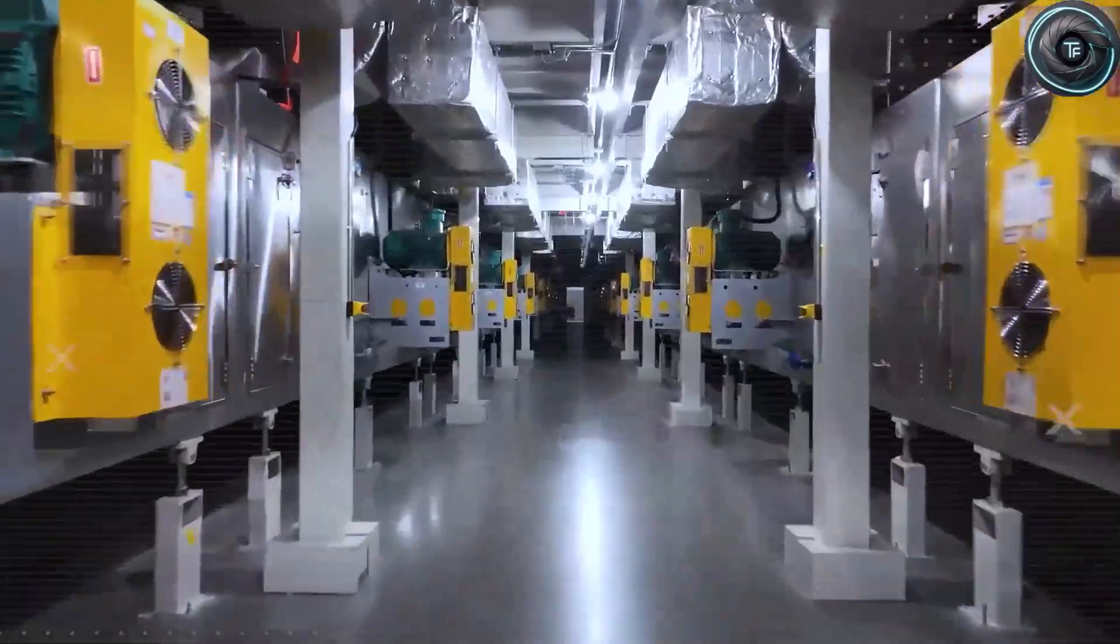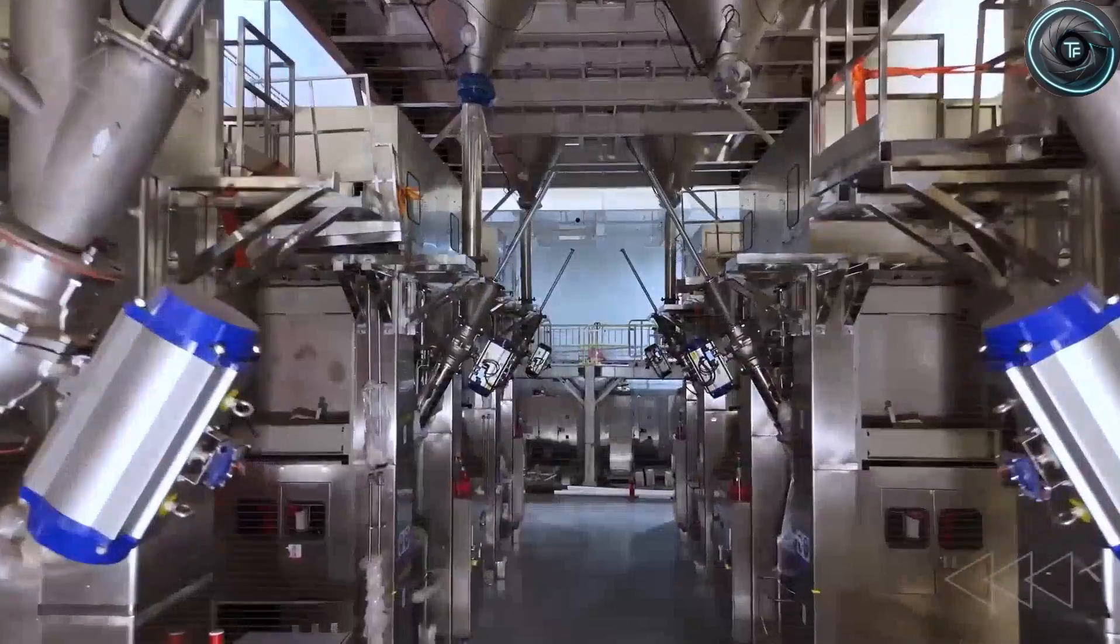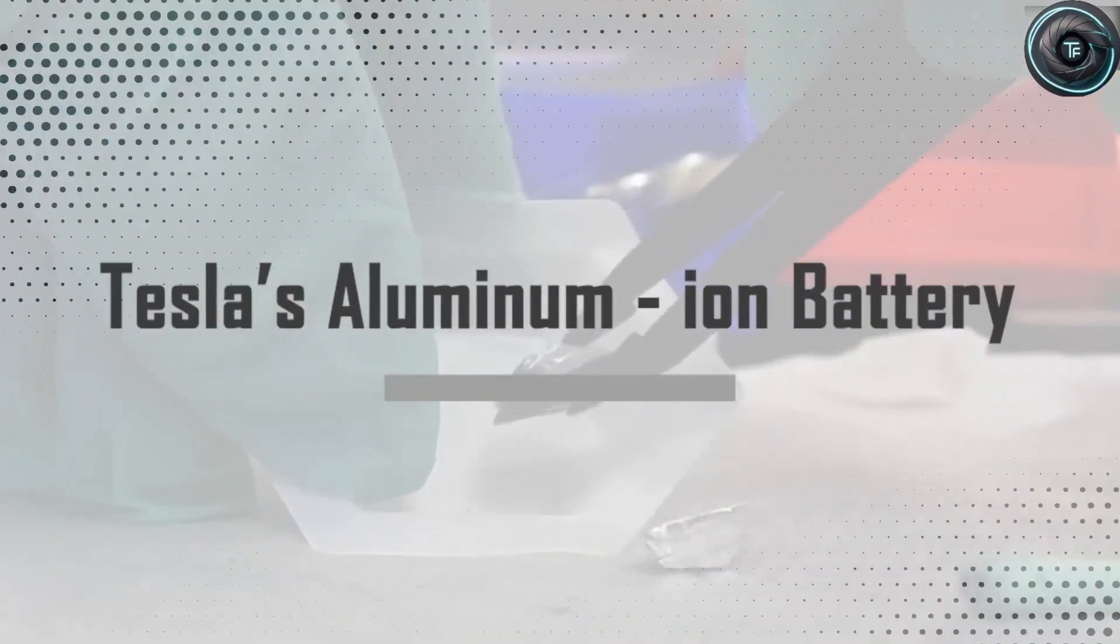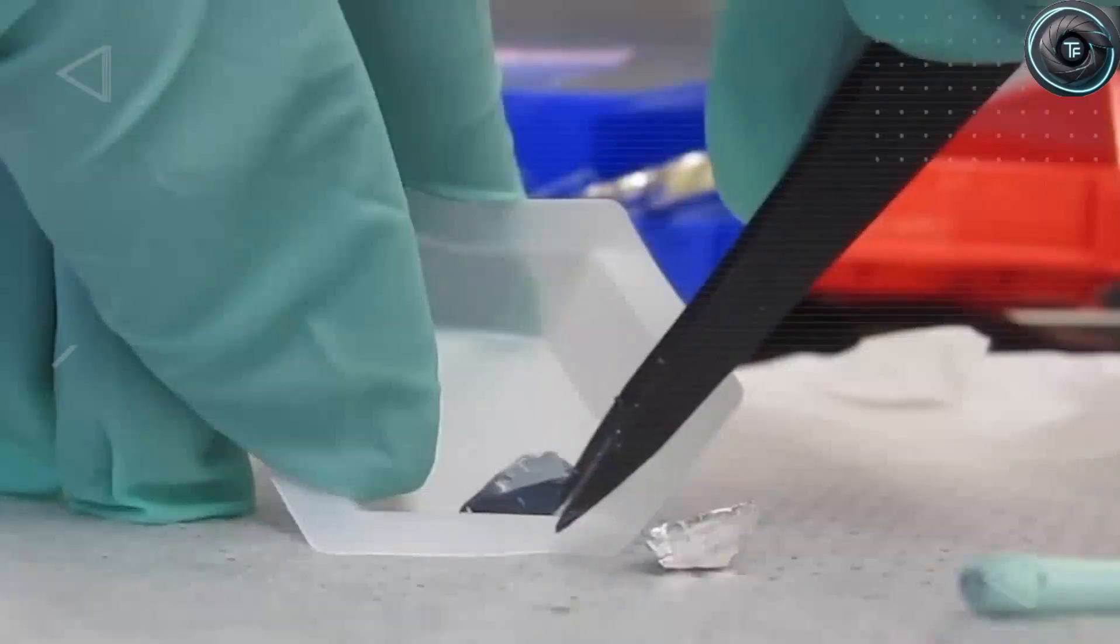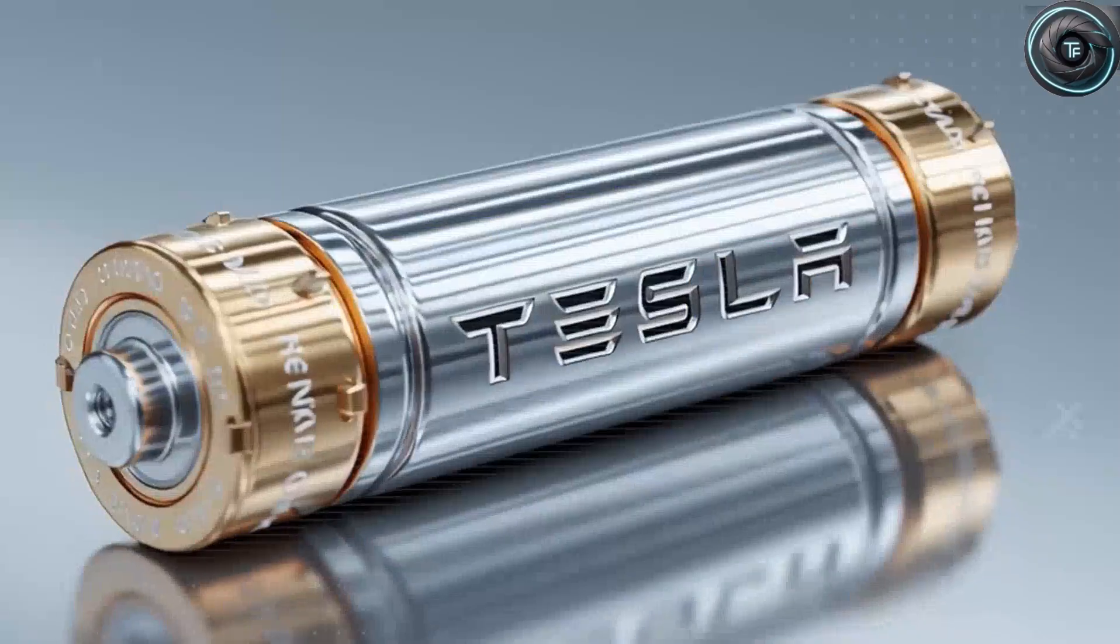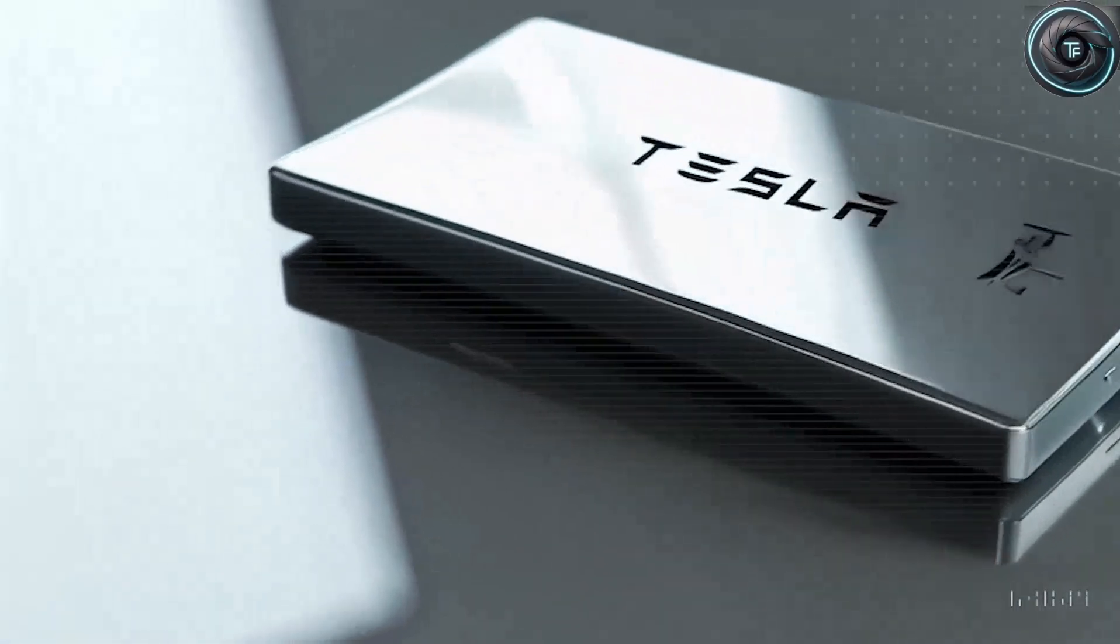Now, let's go back for a moment. Lithium-ion, the chemistry that made Tesla a household name, was a miracle of its time. It powered everything from phones to rockets. But it had limits. It was heavy, it was expensive, and it degraded faster than Elon's patience with production delays.